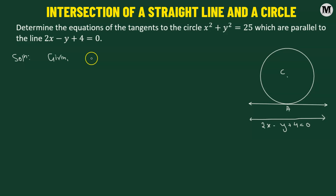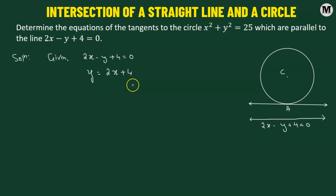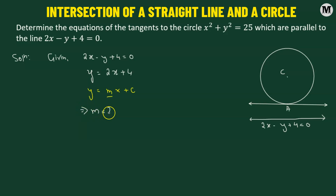We are given the equation of the line 2x minus y plus 4 equals 0. This can also be written as y equals 2x plus 4. We're writing it in this fashion to compare it with the slope-intercept form y equals mx plus c, where m represents the slope of the line. This implies that the slope equals 2. Since the given line is parallel to the tangent line, the tangent line will also have the same slope, m equals 2.